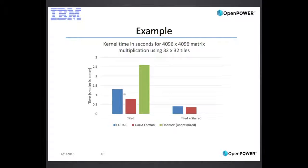You might ask why CUDA Fortran performs even higher than CUDA-C in some cases. Several reasons: the high-level optimizer did some optimization, and I also suspect that column-major versus row-major memory layout might be giving better memory coalescing, though I'm still checking on that.